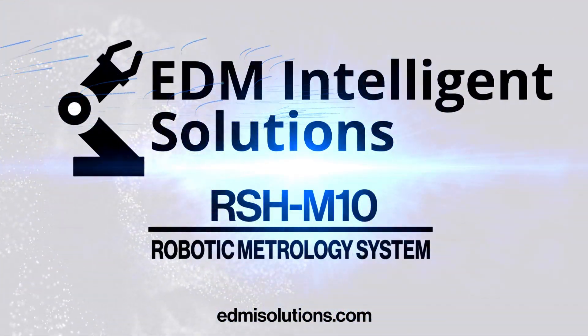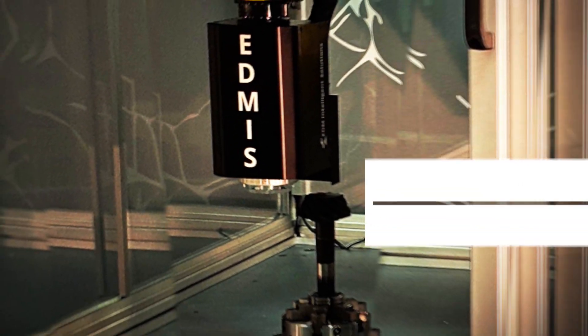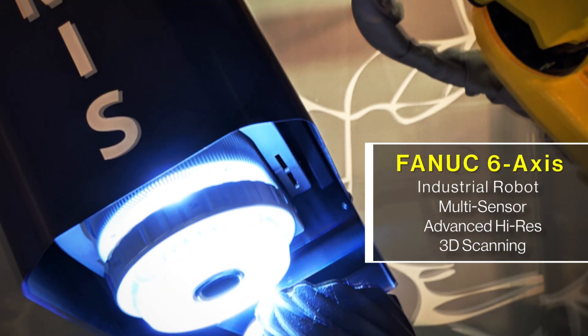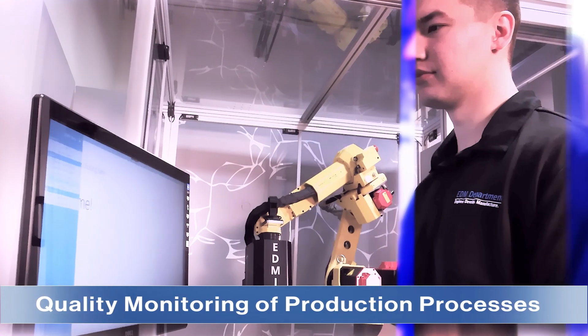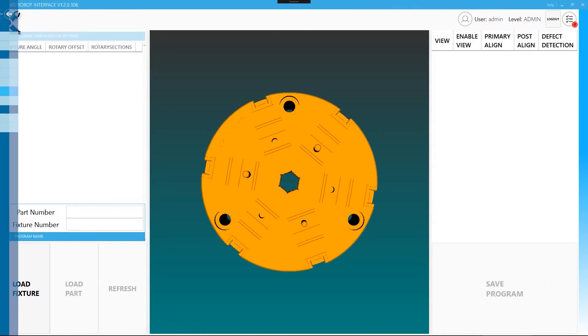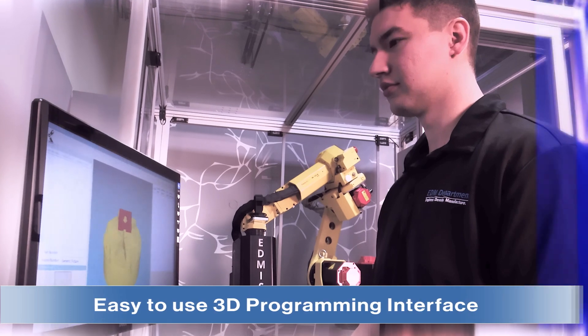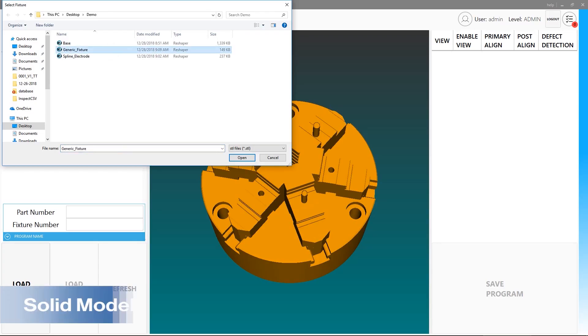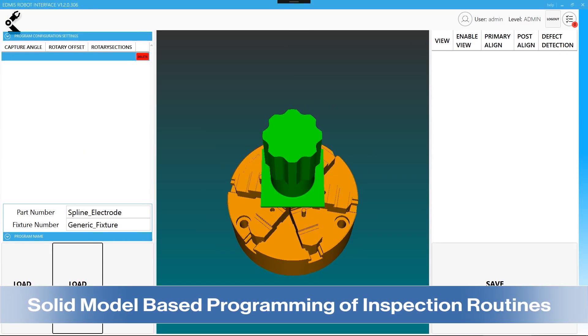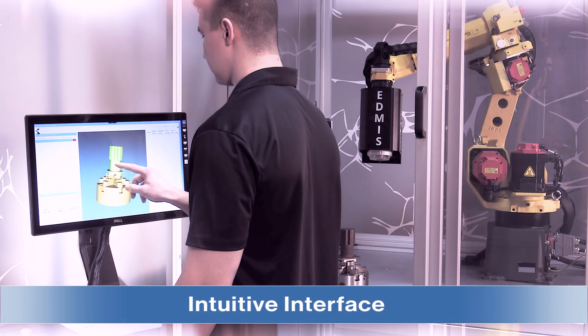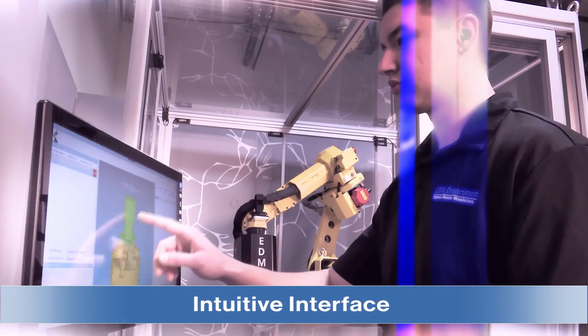The RSH M10 Inspection System features a 6-axis FANUC M10IA-12S robot with fully integrated 3D measurement sensors and precision work-holding devices. The need for complex, hands-on programming of the inspection equipment has been eliminated through the use of Foundation Programming Environment from EDM Intelligence Solutions.